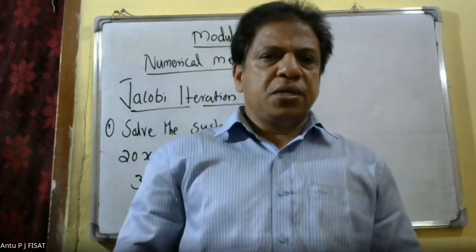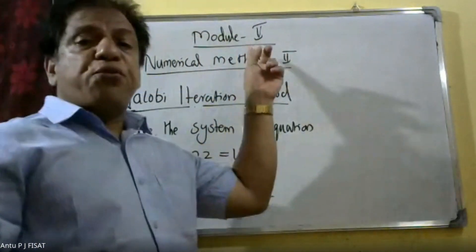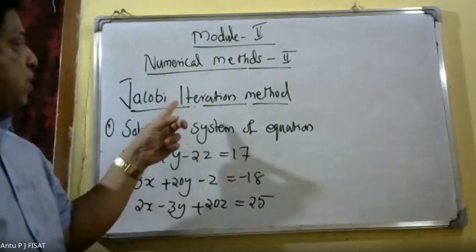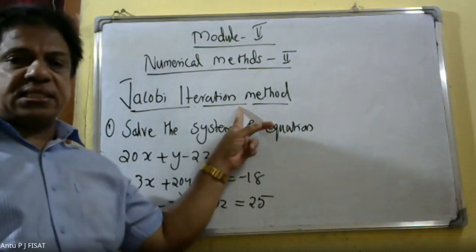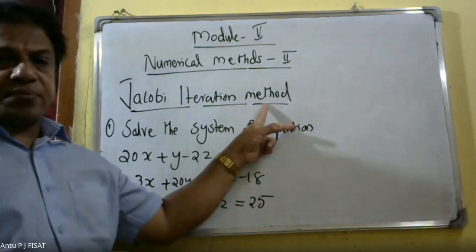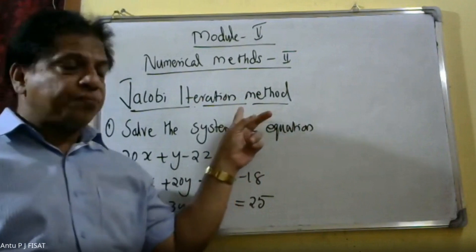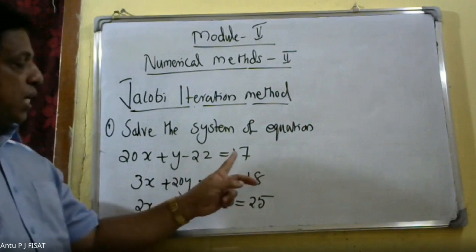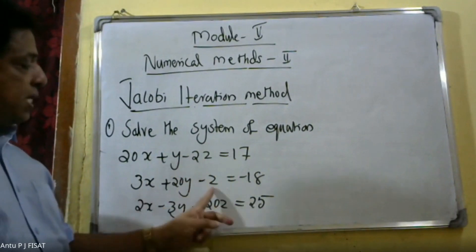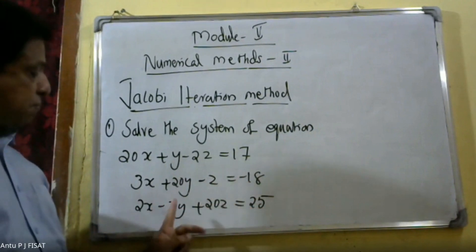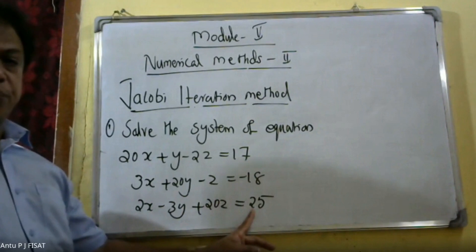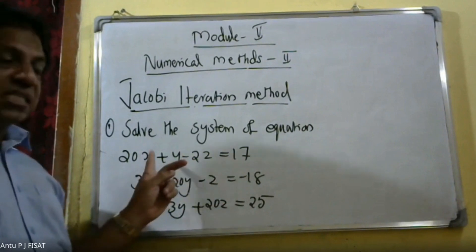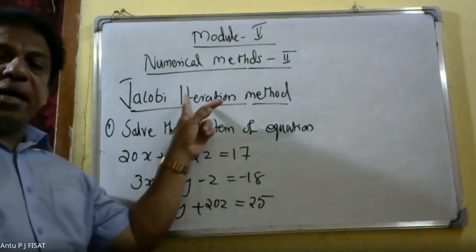Good morning students. Today we will discuss module number five, that is Numerical Methods Two. In this module, first we will discuss the Jacobi iteration method. We will solve the system of equations: 20x + y - 2z = 17, 3x + 20y - z = -18, 2x - 3y + 20z = 25. We have to find the values of x, y, and z using the Jacobi iteration method.